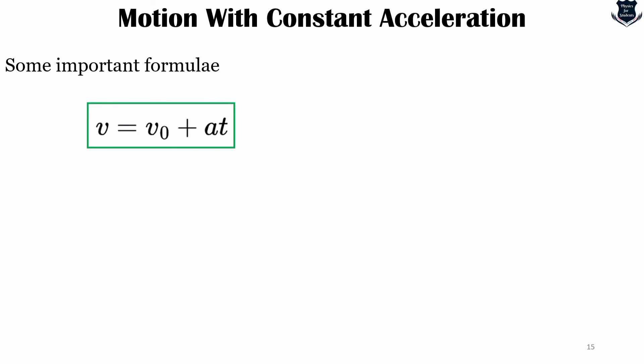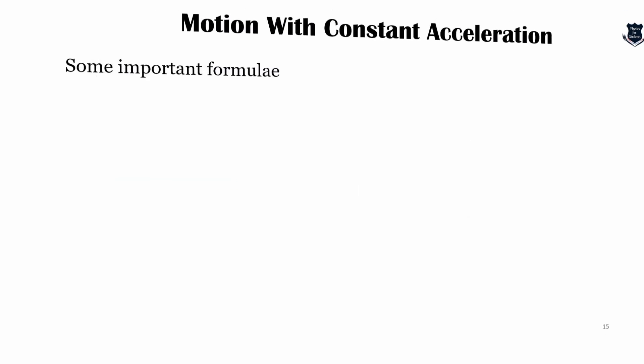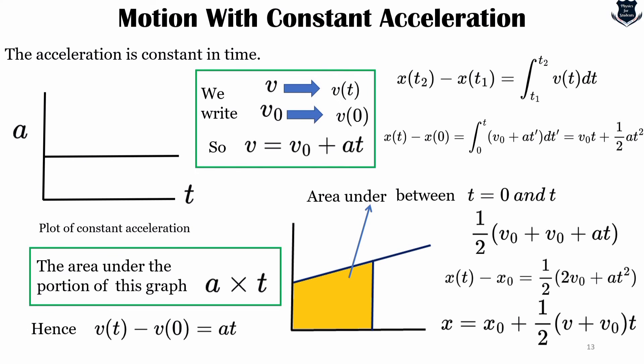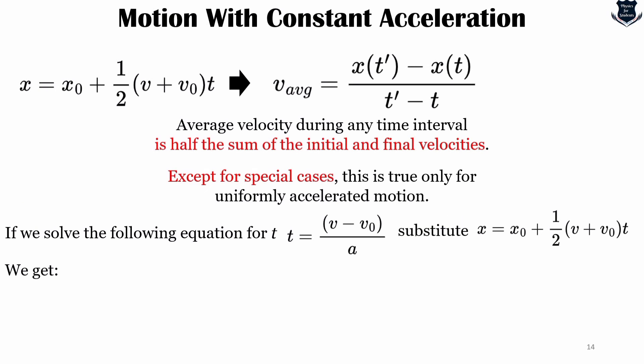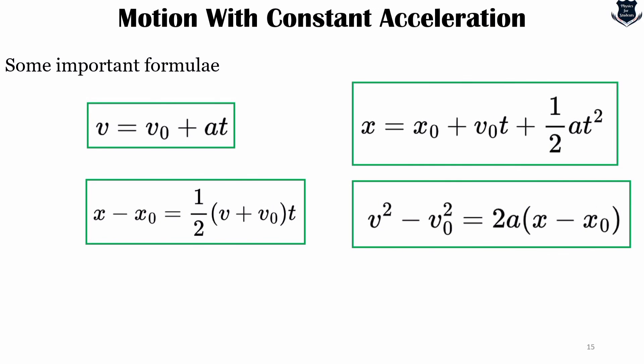From here we get a few of the important formulas. We get this which we have already calculated. We are also getting all these four formulas. Once we have found out this equation x = x₀ plus (v₀ + v)/2 times t, then using calculus we can calculate x(t2) minus x(t1) and from there we get to this.